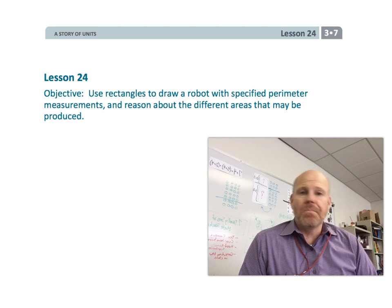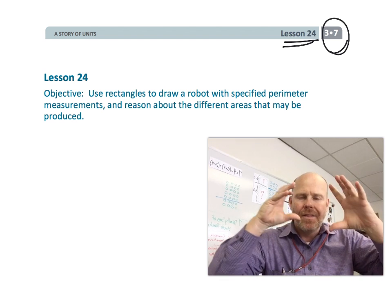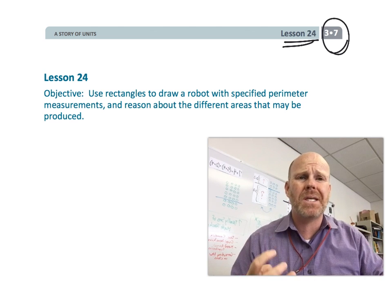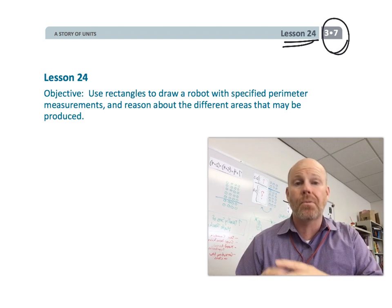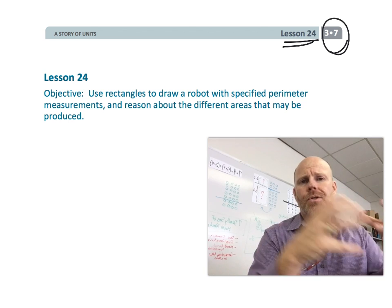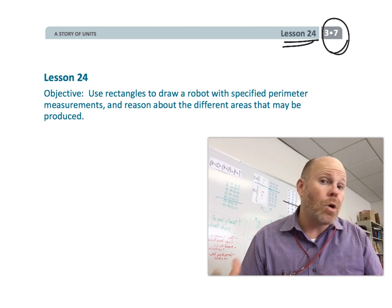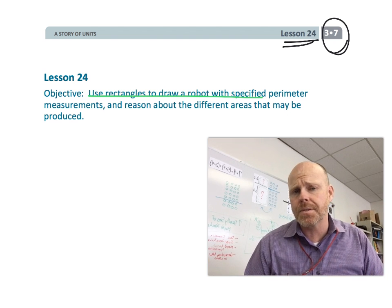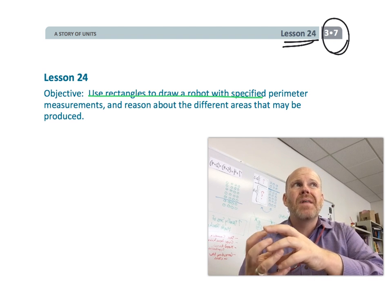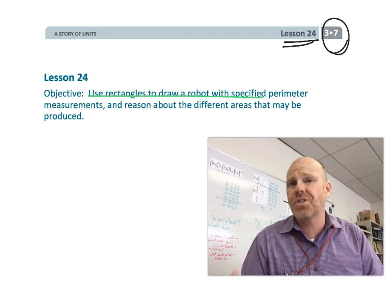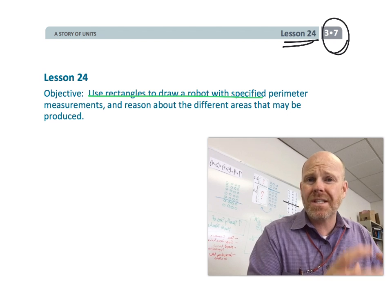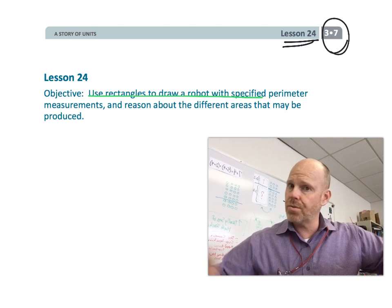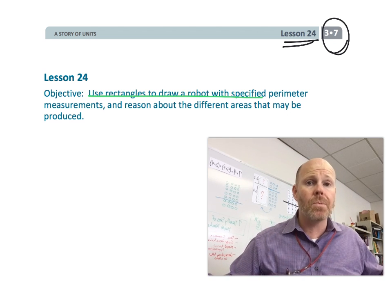All right, this is third grade, module 7, lesson 24. Now, parents and teachers, in this lesson the video is really going to focus on the homework, but the class activity is actually pretty fun. Students are going to be given some constraints — a bunch of rectangle perimeters — and they're going to use those perimeters to build body parts for a robot: arms, body, legs, head, all that sort of stuff. The homework is really just an extension on perimeter, but it has nothing to do with the robots. So parents and teachers, if you're watching this video to prepare for your lesson, this video isn't going to help because the lesson and the homework are two totally different things. So I'm going to start talking about the homework. Let's get started.